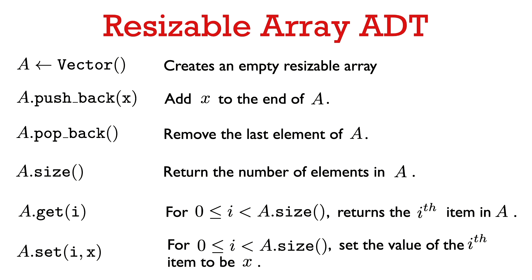We have a function pushback which takes an argument x and adds x to the end of the resizable array. So we can pushback as many times as we want, up to the memory limits of the computer. We also have a function popback which removes the last element of the array. We have a function size which tells us how many elements are currently being stored, and then we have the set and get functions which work just like in the case of a fixed size array.